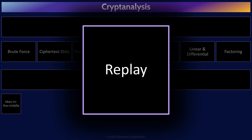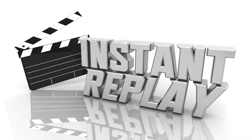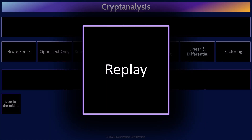A replay attack is a form of man-in-the-middle attack. In a replay attack, the attacker eavesdrops and intercepts data being sent—such as a user's hashed password being sent to a server to authenticate the user. The attacker cannot necessarily decipher the intercepted data, but they can replay it—resend it later to their advantage. For example, the attacker could resend the hash of a user's password to masquerade as the user and gain unauthorized access.